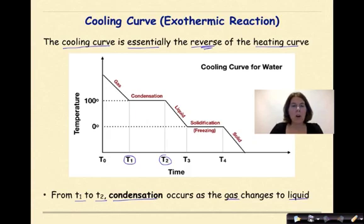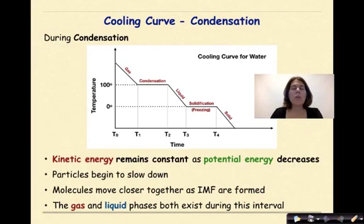So we're going through a phase change here. We're starting with a gas and we're going to a liquid. The phase change here is called condensation, where energy will be released from the system out into the surroundings. During condensation, kinetic energy remains constant as potential energy decreases. Particles begin to slow down, molecules move closer together as intermolecular forces are formed, and the gas and liquid phases both exist during this interval.